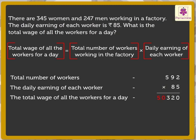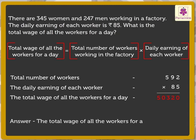Thus, total wage of all the workers for a day is equal to 592 into 85. By multiplying these numbers we get the answer as 50,320 rupees.